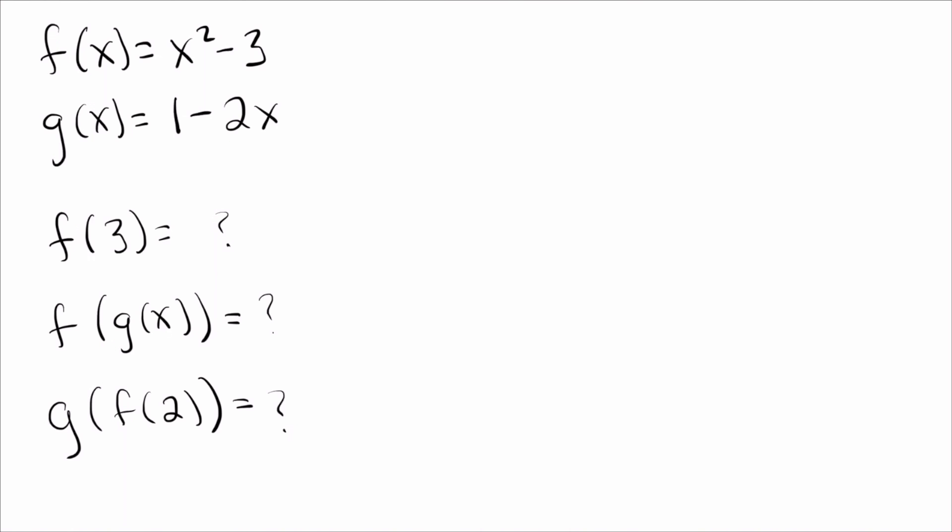I think the right way to think about it is not as f of x equals x squared minus 3, but as f of a box. And you can put into that box anything you want. So here I've taken the x's and I've replaced them with a box. So let's do the same thing for g. So it's g of 1 minus 2 times our box.